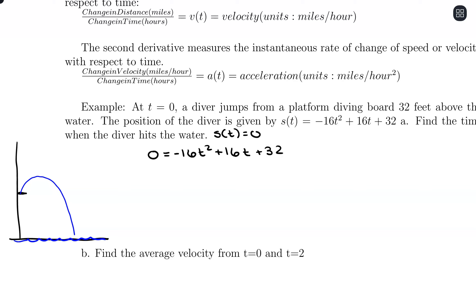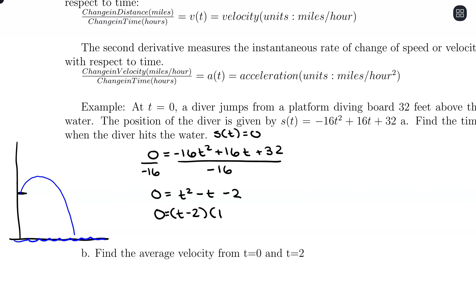This is a nice one we can simplify. Dividing by negative 16: 0 equals T squared minus T minus 2. Factoring: 0 equals (T minus 2)(T plus 1). So T equals positive 2 or T equals negative 1. T equals negative 1 is not a possibility — we can't have negative time. So the diver hits the water at T equals 2 seconds. Keep in mind the quadratic formula as well if it doesn't factor easily.